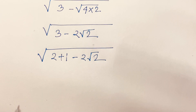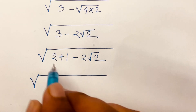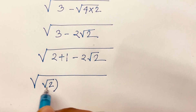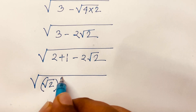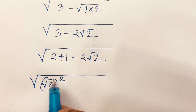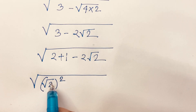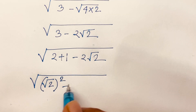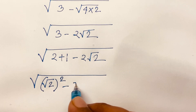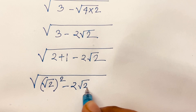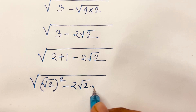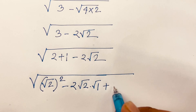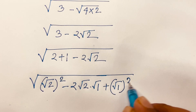Rewrite 2 as (√2)², so the expression inside becomes (√2)² minus 2·√2·√1 plus (√1)². The outer square root of 2 is now expressed as (√2)².